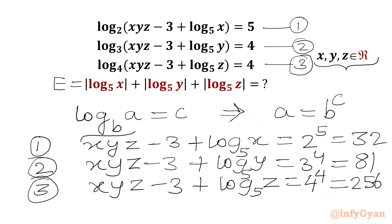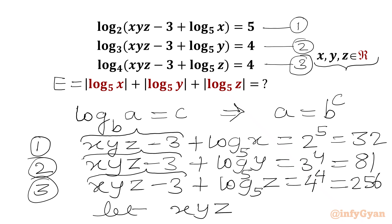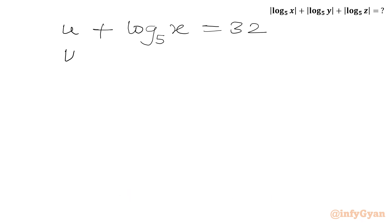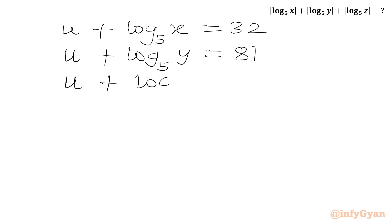Now in all three equations we have xyz minus 3. So it is better to consider xyz minus 3 equal to u. So I can write: equation one — u plus log x base 5 is 32; equation two — u plus log y base 5 is 81; equation three — u plus log z base 5 is 256.